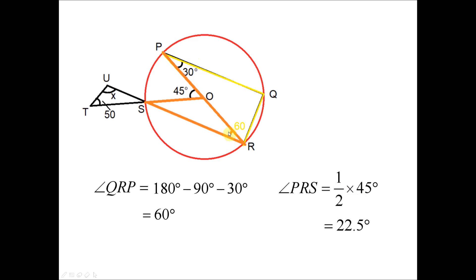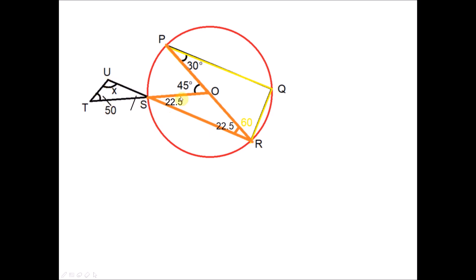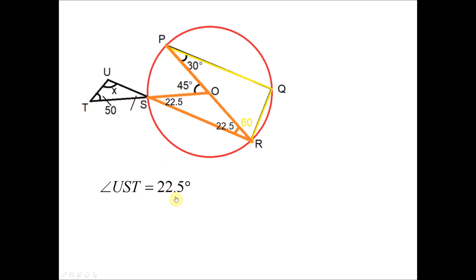So angle PRS is half of 45, which is 22.5 degrees. Since USR and TSO are two straight lines, this angle and that angle are vertically opposite angles. Hence angle UST also equals 22.5 degrees. Since we know this is 22.5, we can find X by taking 180 minus 50 minus 22.5. So X equals 107.5 degrees, which is the final answer.